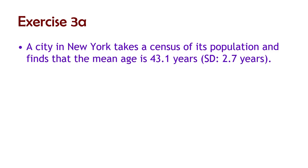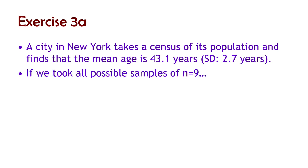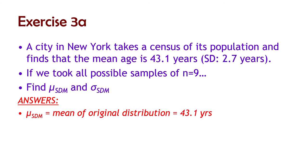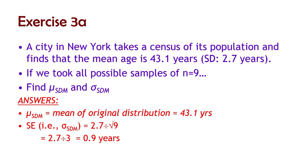A city in New York takes a census of its population and looks at age, finding the mean age is 43.1 years with a standard deviation of 2.7. Consider all possible samples of n equals 9. Find the mean and standard deviation of the distribution of all possible means. The mean is the same as the original mean: 43.1. The standard deviation is 2.7 divided by the square root of 9, which is 2.7 divided by 3 — giving 0.9 years.